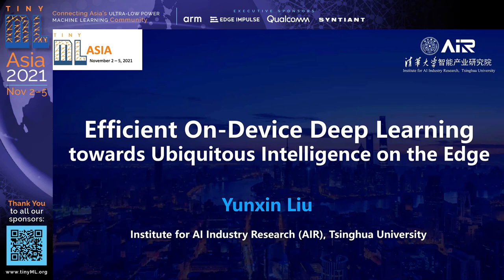Yunxin Liu is a Guoqiang professor at the Institute for AI Industry Research, Tsinghua University. Prior to joining Tsinghua, he was a principal research manager at Microsoft Research Asia. His research interests are mobile and edge computing, and his research work has been published in top conferences and journals. His presentation topic today is Efficient On-Device Deep Learning Towards Ubiquitous Intelligence on the Edge.